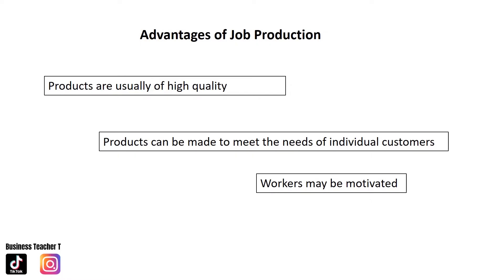Advantages of job production: products are usually high quality because the workers are skilled. The products can be made to meet the needs of individual customers. Workers may also be motivated as they are able to start and finish a job and see that they have produced high quality work.